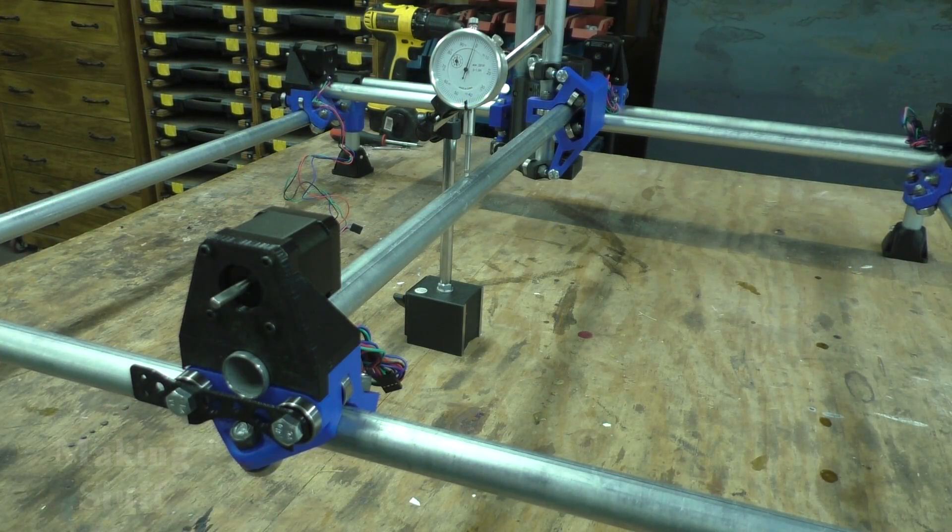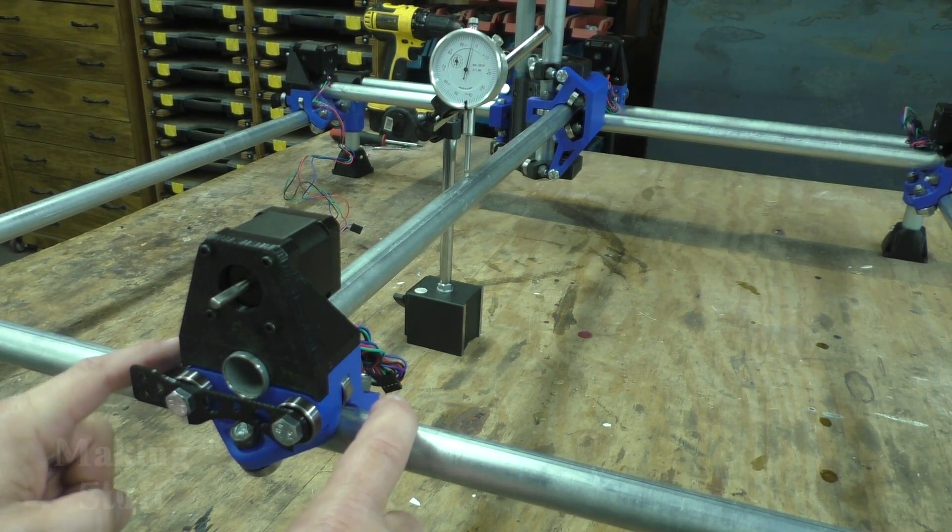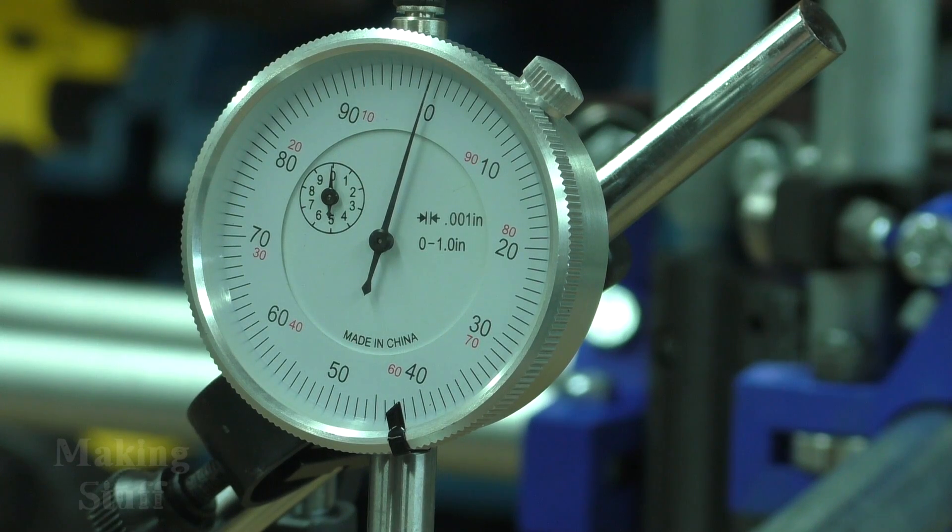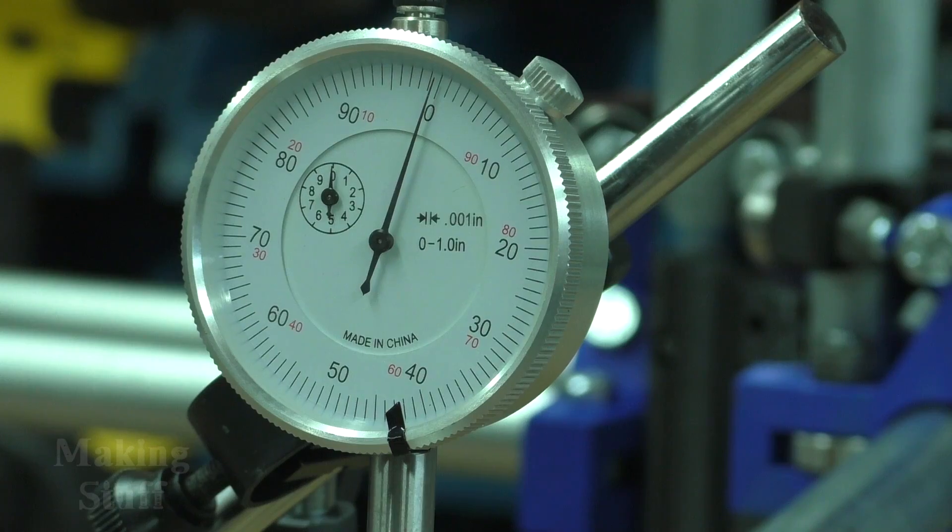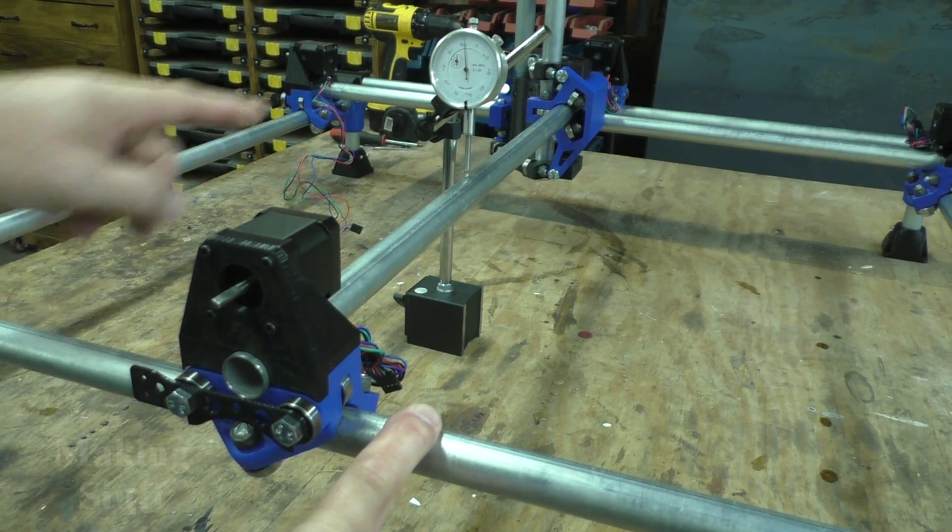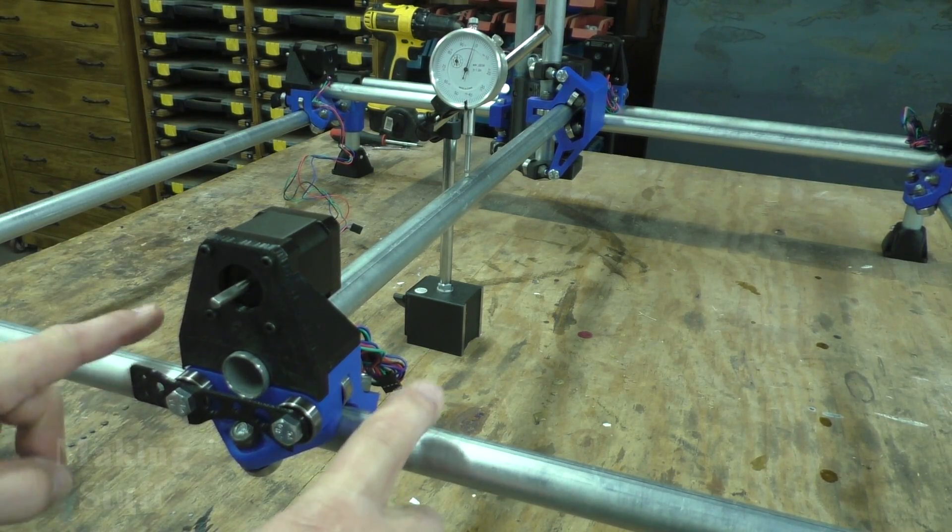I've got the dial indicator hooked up and I'm going to push down on this rail with two fingers about as hard as I can. It actually hurts my fingers to push down on that for more than just a couple of seconds, and it's bending here on the dial indicator about 30 thousandths.